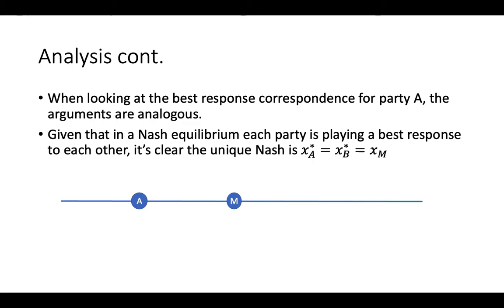So when we look at A, we're going to look at the best response for A. It should be clear it's symmetric, right? So the argument's going to be exactly the same. Their best response correspondence is going to be completely analogous. You might have to flip some subscripts and stuff, but it's going to be exactly the same. So basically, they have symmetric strategies when we're in a Nash.